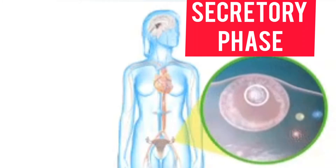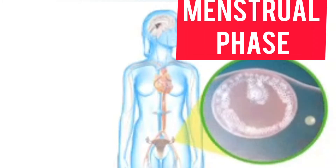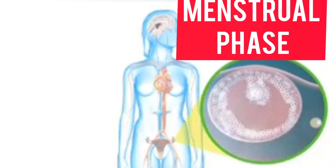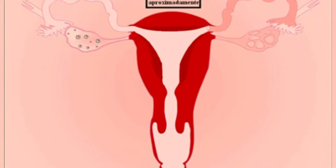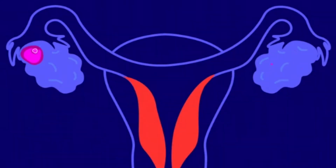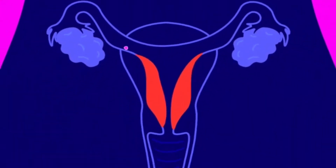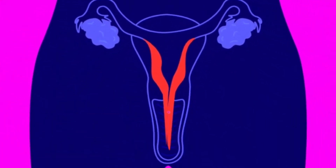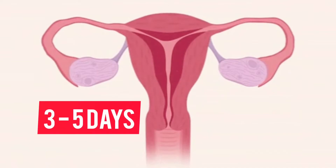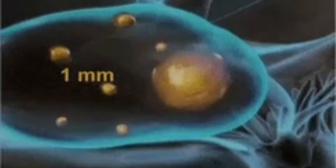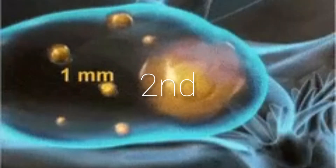The menstrual phase is the first phase of the menstrual cycle. Here, the soft tissues of the endometrium — the lining of the uterus — disintegrate, causing bleeding. The unfertilized egg and the soft tissues of the uterus are discharged. This phase lasts for about three to five days.